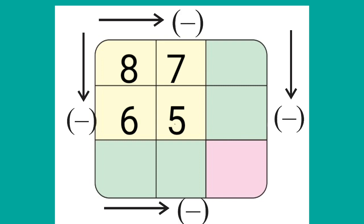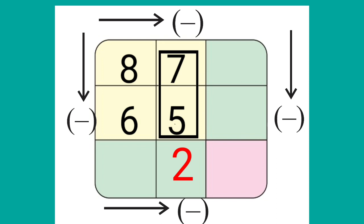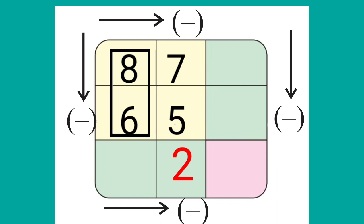A new question is here for us. Here we have subtraction — you can see the minus sign in the brackets. Starting from the right side, we will subtract the lower number from the upper number. 7 minus 5 is equal to 2. At the left side, 8 minus 6 is 2.